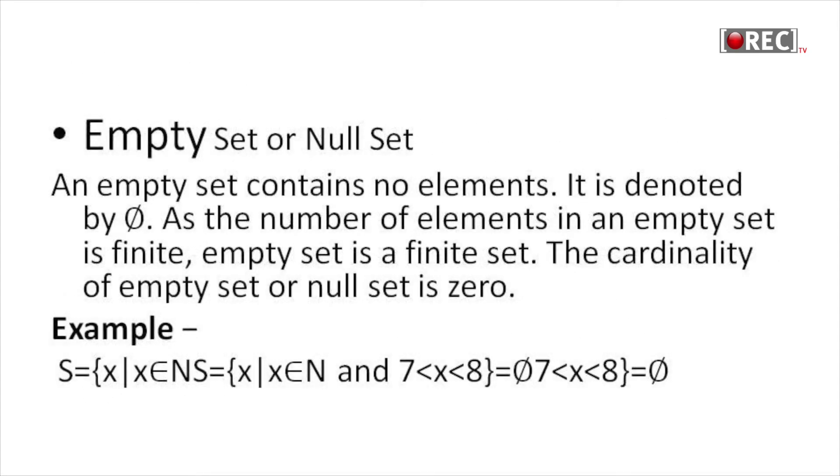Empty set or null set: An empty set contains no elements. It is denoted by phi. As the number of elements in the empty set is finite, the empty set is a finite set. The cardinality of the empty set or null set is zero. For example, the set of numbers between 7 and 8. There is no number between 7 and 8, so X is a null set.